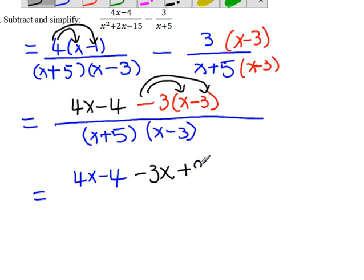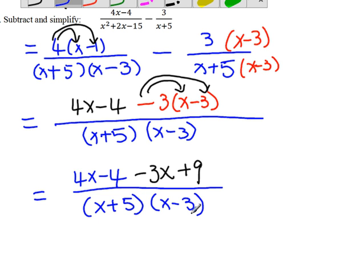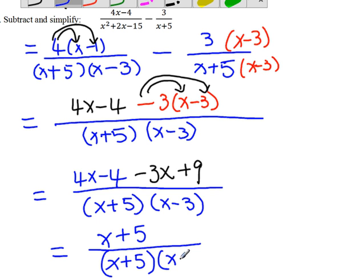Over (x+5)(x-3). Now simplify it, 4x minus 3x, we get x, negative 4 plus 9, we get positive 5. x plus 5 over (x+5)(x-3).